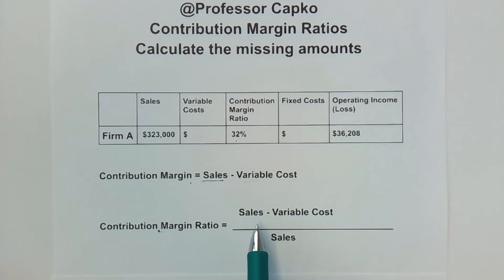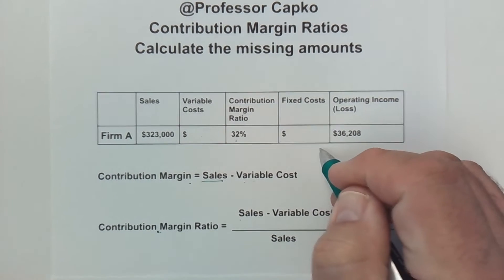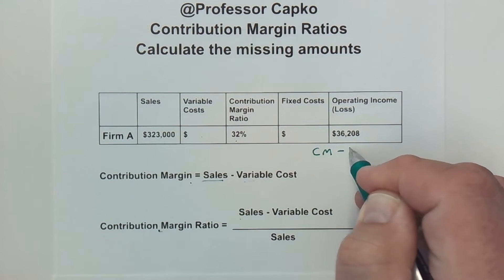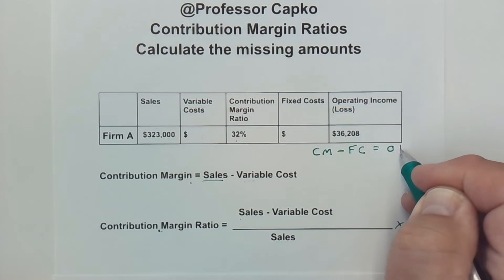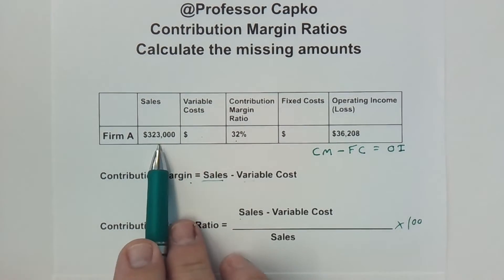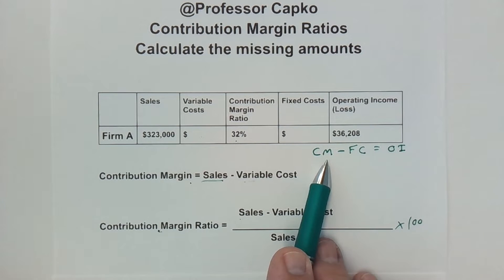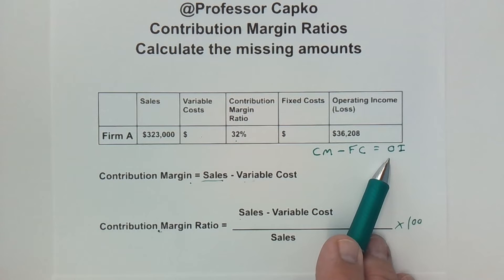Contribution margin ratio is found by taking your sales figure, subtract out the variable costs, and then you divide it by your sales figure again. And that's going to give you a decimal, and we multiply that by 100 to get a percentage. That's how we find the contribution margin ratio. The only other thing we need to know would be that our contribution margin minus our fixed costs is equal to our operating income. So your sales minus your variable costs gives your contribution margin. Take the contribution margin, subtract out the fixed costs, and that's going to give you your operating income. Or if fixed costs are higher than this, it will wind up being a negative number.